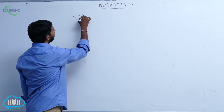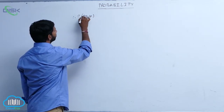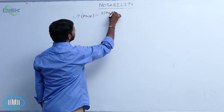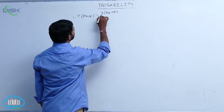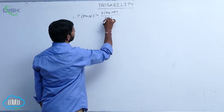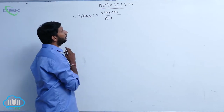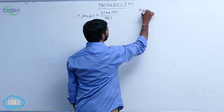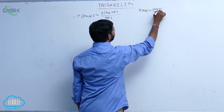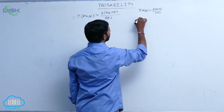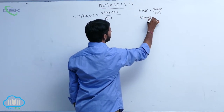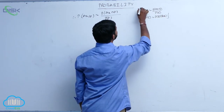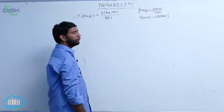Therefore, P of A k given E is equal to — applying the multiplication theorem — P of A k intersection E by P of E. By using the multiplication theorem, P of A given B is equal to P of A intersection B by P of B. Cross multiplying, P of A intersection B is equal to P of B into P of A given B.